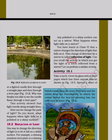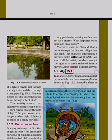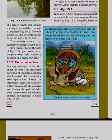Can you recall the activity in which you got the light of a torch reflected from a mirror? Let us perform a similar activity. Activity 15.1: Take a torch. Cover its glass with a chart paper which has three narrow slits as shown in figure 15.5. Spread a sheet of light on a smooth wooden board.